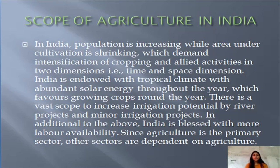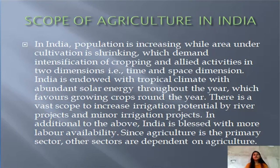India is endowed with a tropical climate with abundant solar energy throughout the year, which favors growing crops around the year. There is a vast scope for increased irrigation potential through river projects and minor irrigation projects. In addition, India is blessed with more labor availability since agriculture is the primary sector and other sectors are dependent on agriculture.